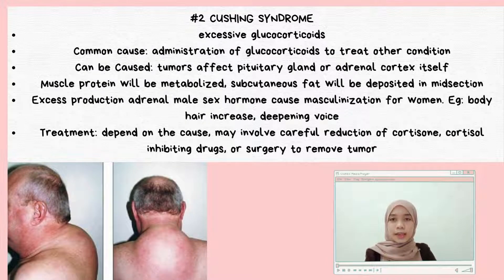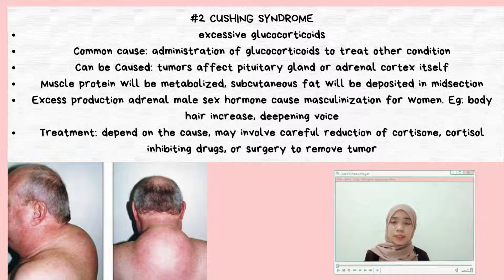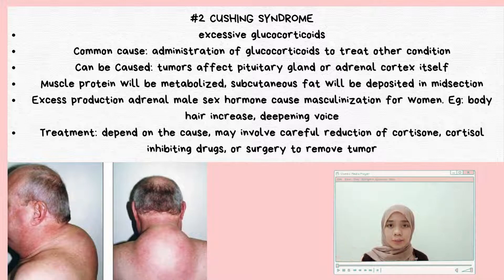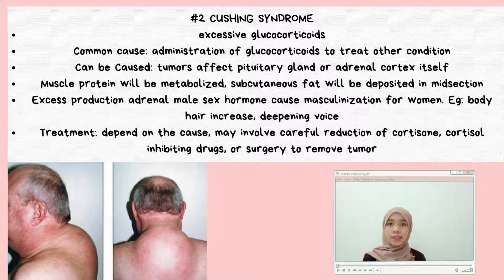Cushing's syndrome occurs when there are excessive glucocorticoids. The common cause is administration of glucocorticoids to treat other conditions, or tumors affecting the pituitary gland or adrenal cortex itself. This causes muscle protein to be metabolized and subcutaneous fat to be deposited in the midsection. There is also excess production of adrenal male sex hormones, causing masculinization in women, such as increased body hair and a deepening voice.